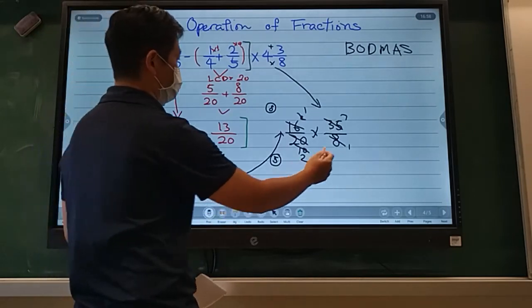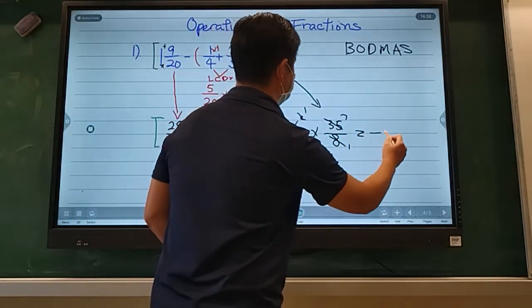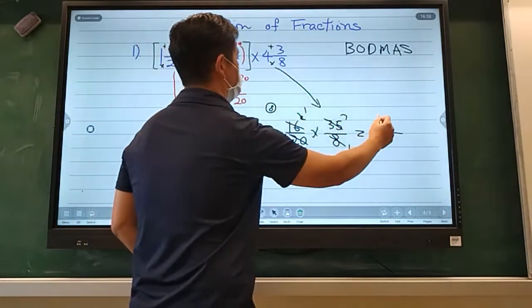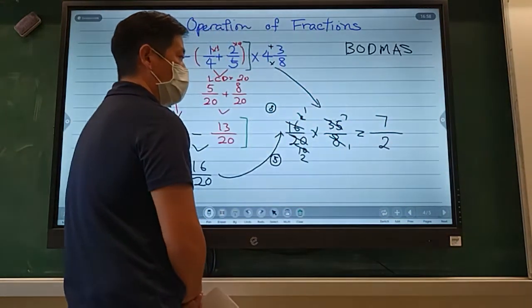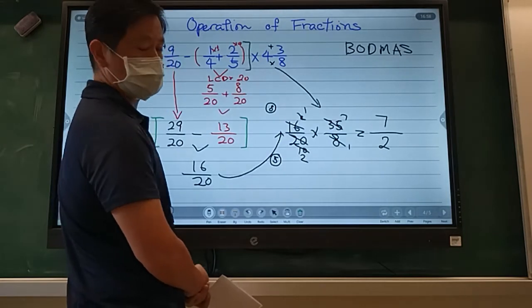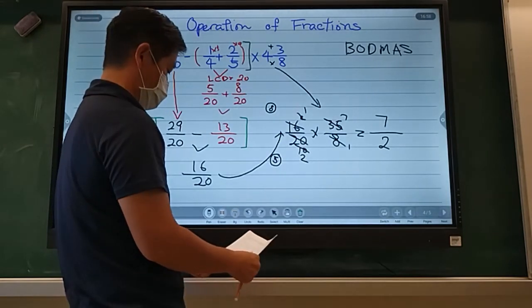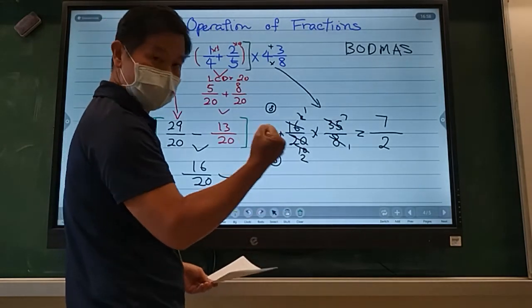So if not, let's multiply. One times seven is seven on top. Two times one is two on the bottom. Double check. Let's check my answer. Seven over two. Yes!